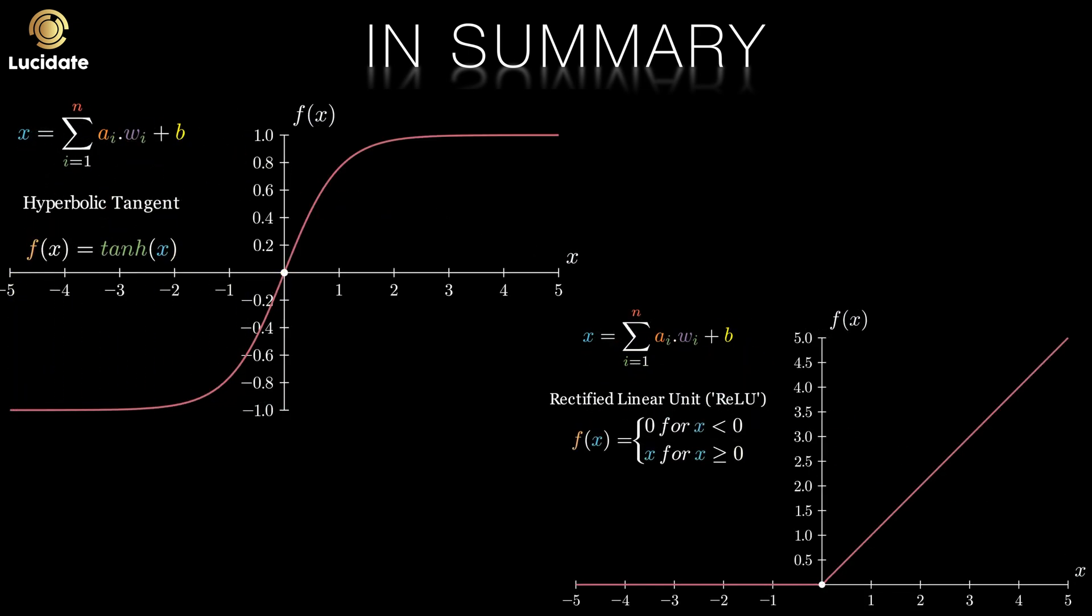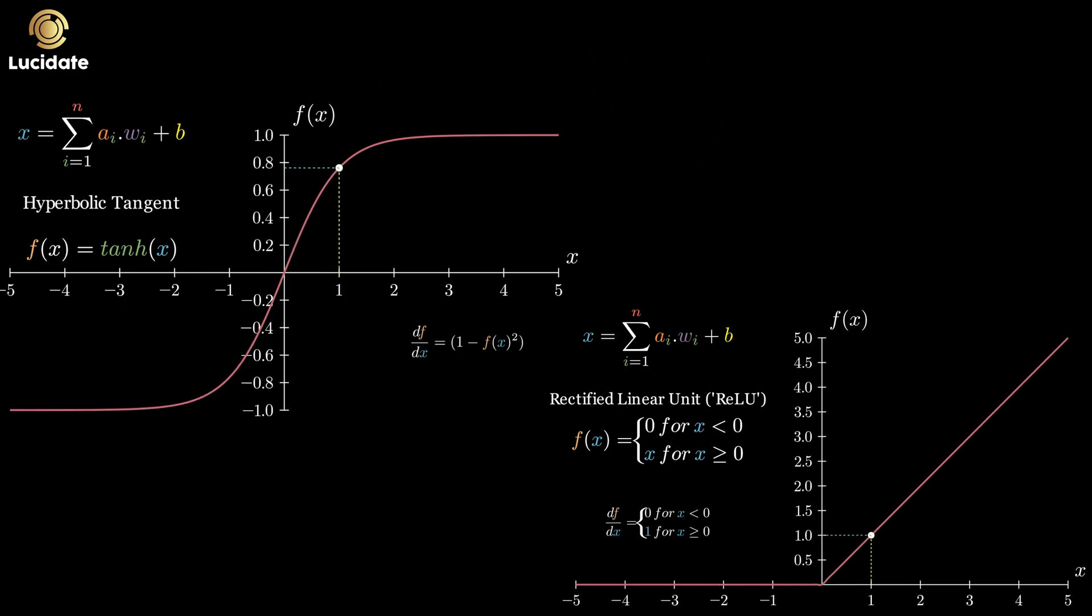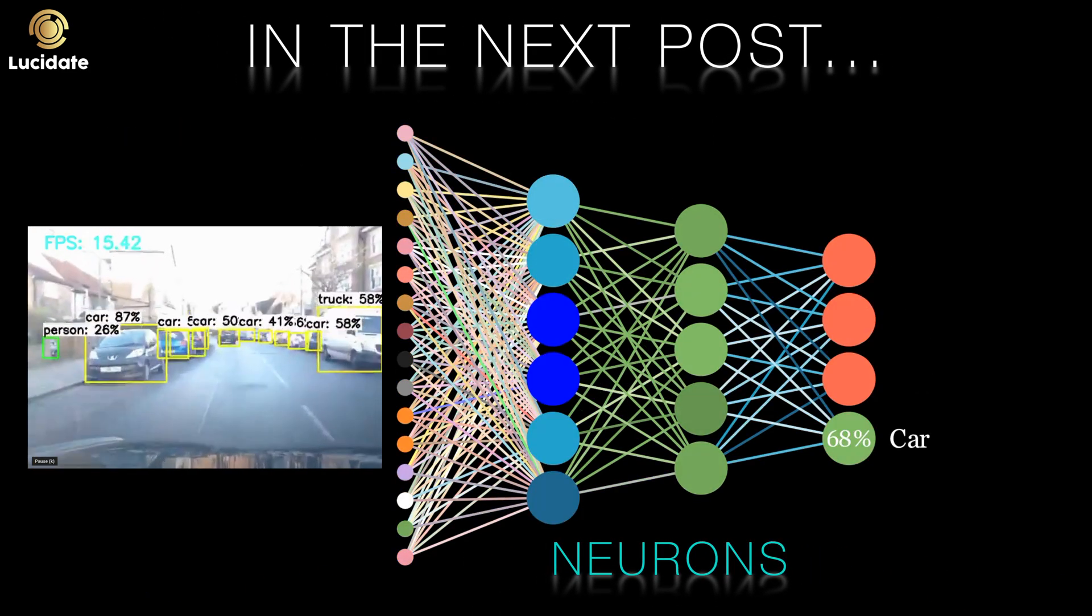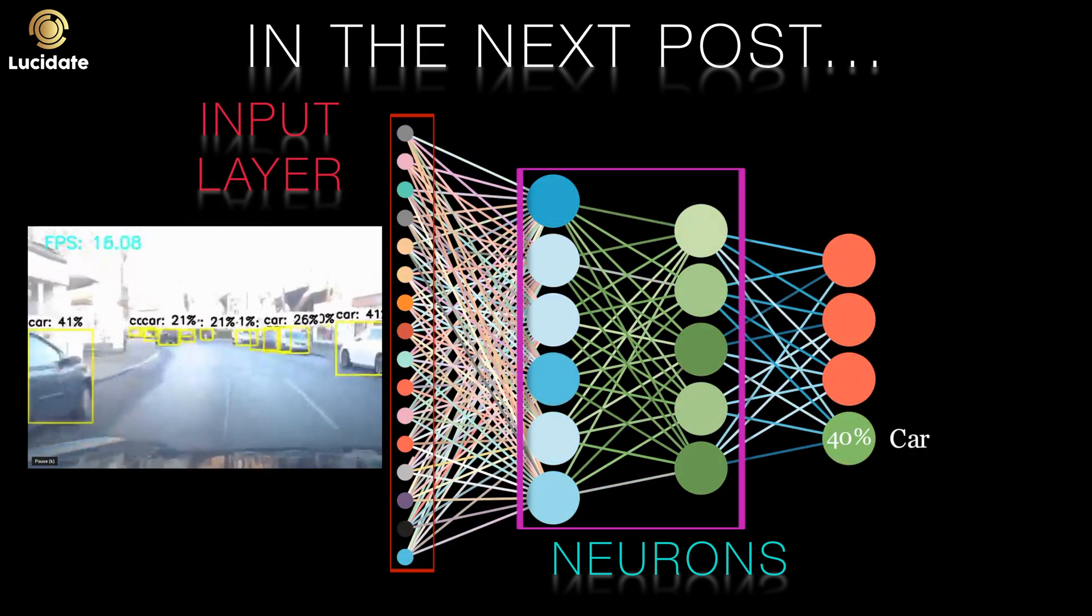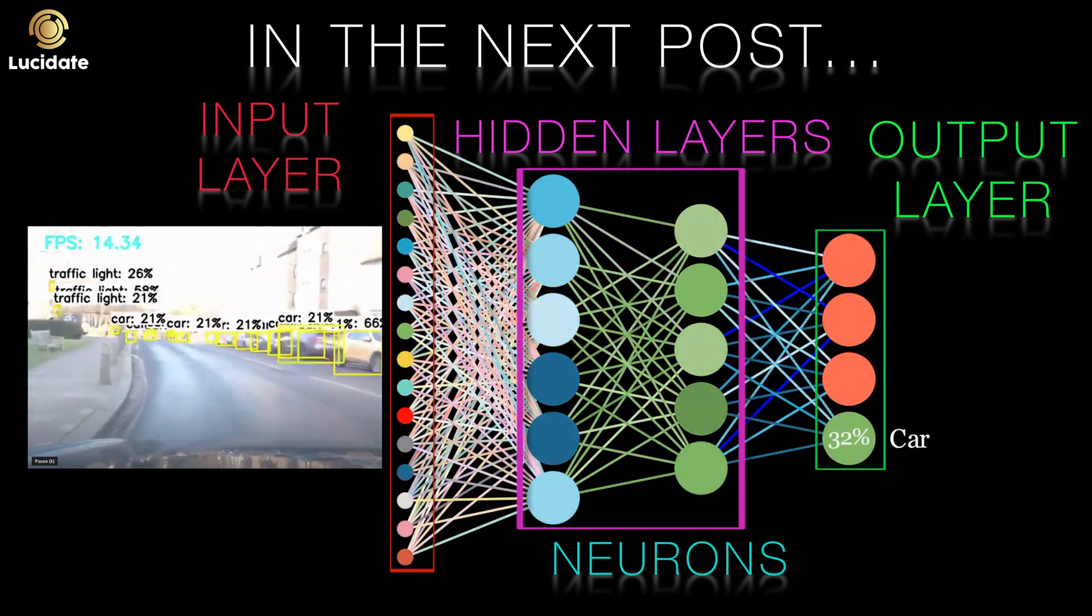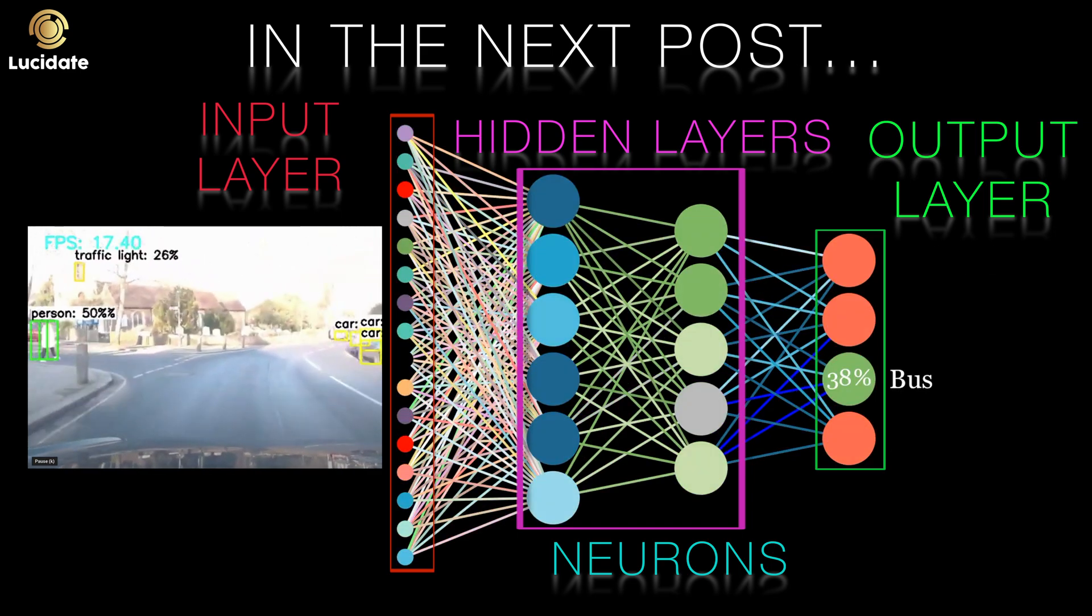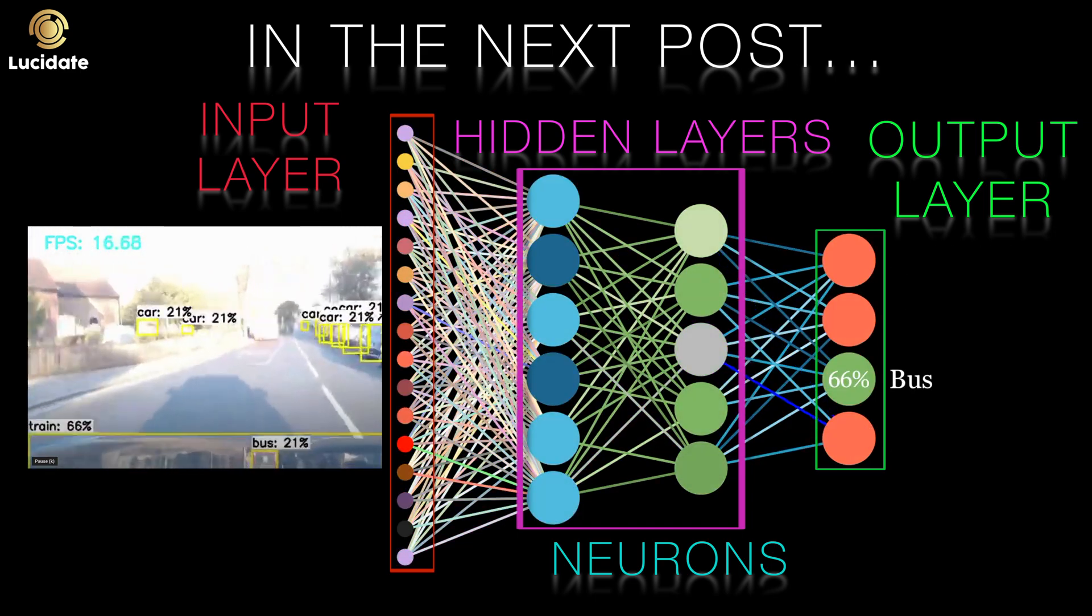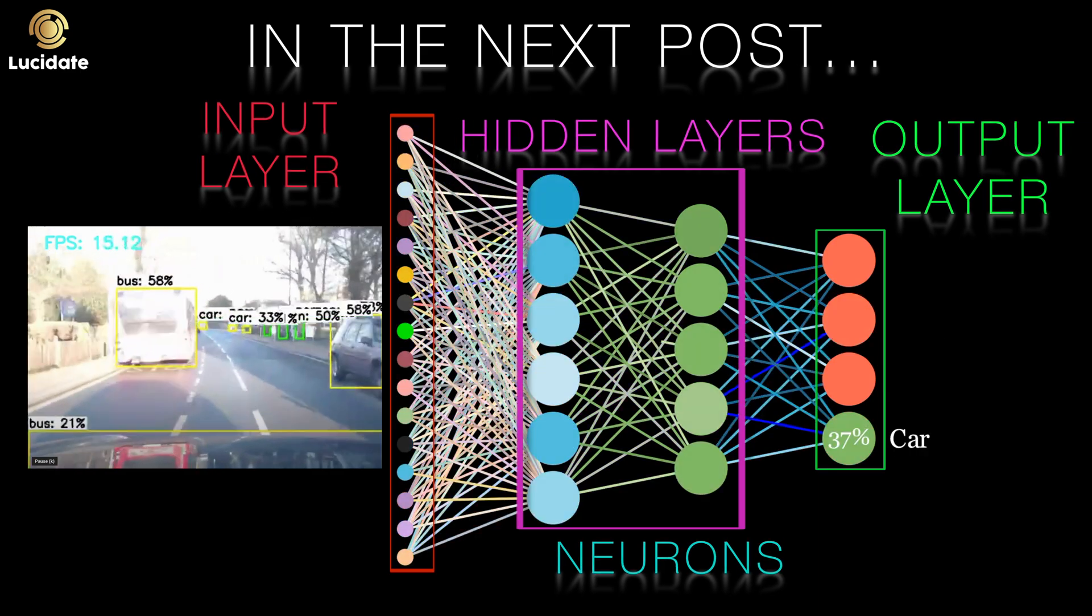When training neural networks initially, it's perhaps best to start with RELU or hyperbolic tangent, but do be on the lookout for areas where you might profit from some of the dozens of alternatives. In the next post, we'll look at linking neurons together in layers: input layers, output layers, and hidden layers. After that, we'll get into how we train and optimize these networks.